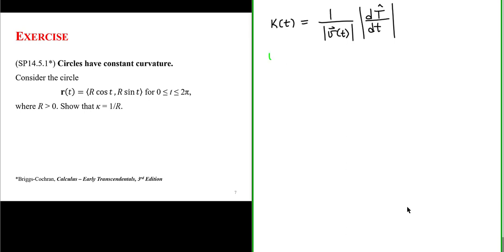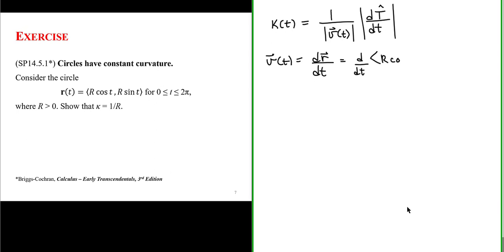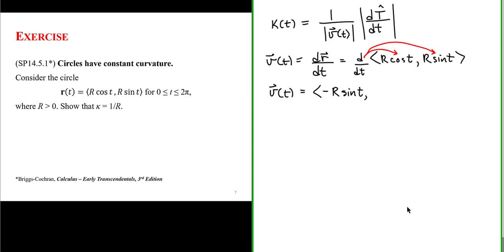Let's look at the velocity of our curve. The velocity is equal to the rate at which our curve changes with respect to the parameter t — the derivative with respect to t of our position vector function, given by r cosine of t for the x component and r sine of t for the y component. Applying the derivative operator to each component gives us minus r sine of t for the x component of velocity and r cosine of t for the y component.